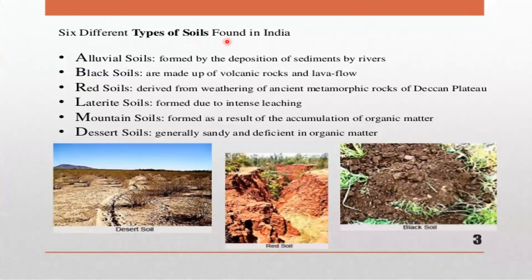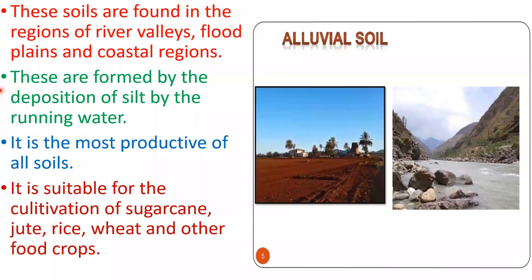Six different types of soils are found in India: alluvial soil, black soil, red soil, laterite soil, mountain soil and desert soil. Alluvial soils are found in river valleys, flood plains and coastal regions. They are formed by the deposition of silt brought down by running water. It is the most productive of all soils, suitable for cultivation of sugarcane, jute, rice, wheat and other food crops. In India, alluvial soil is found in the northern great Gangetic plains and also in the deltaic parts of the east coast.